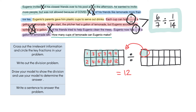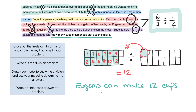The last part says to write a sentence to answer the problem. Our question asks: how many cups of lemonade can Eugenio make? So we write our answer sentence: Eugenio can make twelve cups of lemonade.